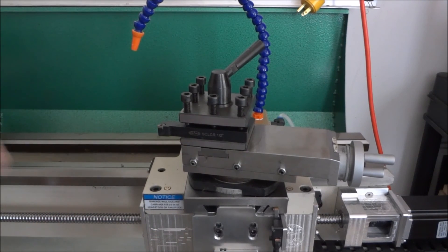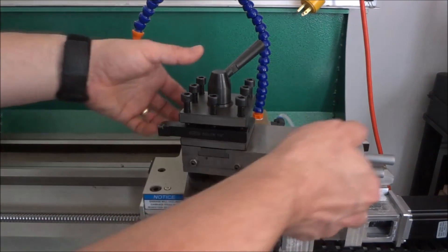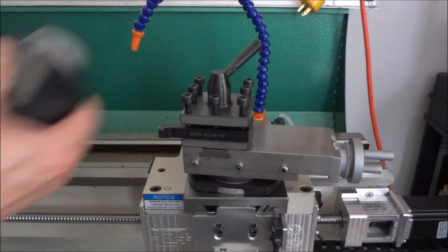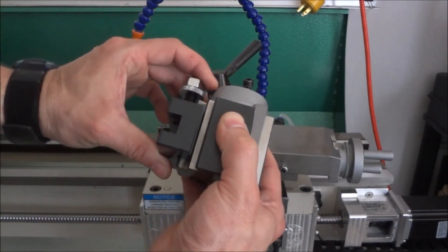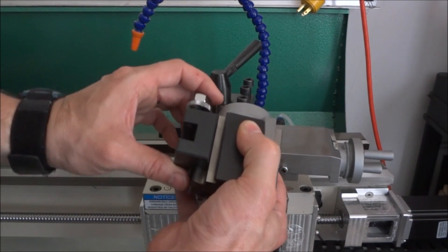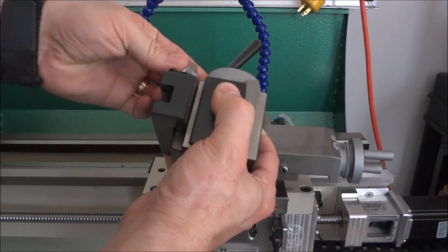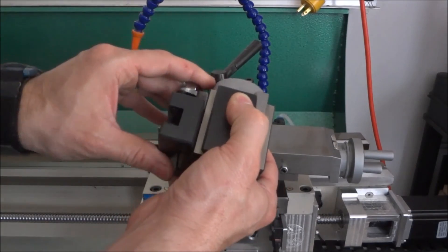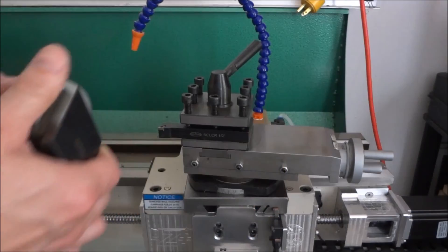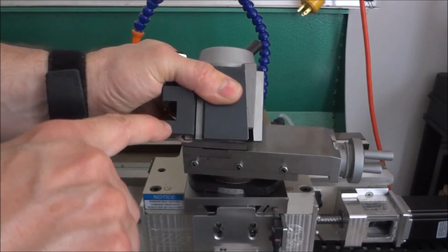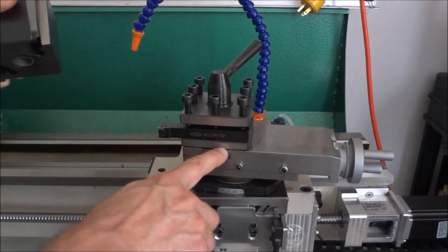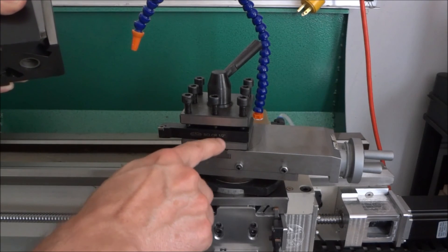I wanted to get something to match that, but the quick change tool post is a little different because you have the ability to adjust the height of the tool with ease. That's what makes these so popular, other than the fact that you can easily swap out your tools. I just have to determine the height of my cutting tool in reference to the height of the quick change tool post.